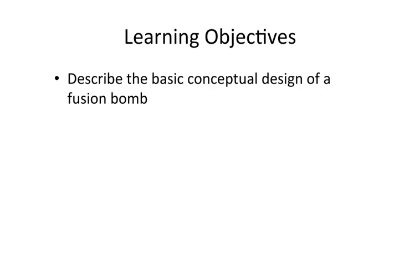Here's the learning objective for today's segment. When we are done, you should be able to describe the basic conceptual design of a fusion bomb — so if you're sitting around a table at dinner with friends or family and someone asks how a fusion bomb works, you should be able to pull out a piece of paper and a pen, draw a basic schematic, and describe how the bomb works. And because we covered it earlier, you should be able to do the same with a fission bomb design and describe the differences between the two.